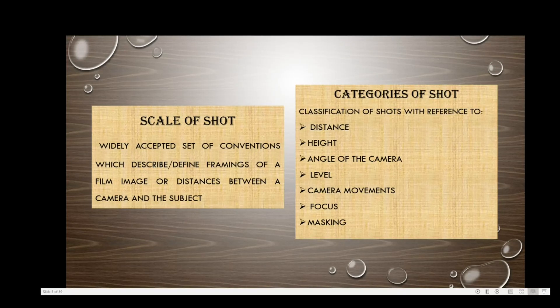Camera movement can heighten emotion and suspense in a scene. The cinematographer chooses to move the camera with the characters to gain perspective. There are different ways of doing this: either the camera moves with the character, or the camera is kept static — and when the camera is kept static, we are actually separated from the characters.